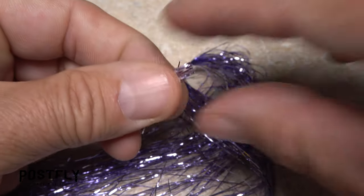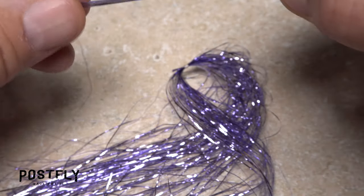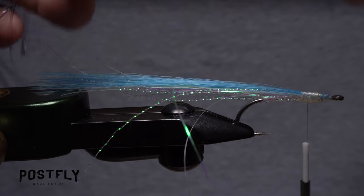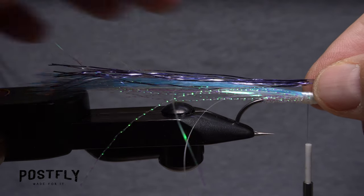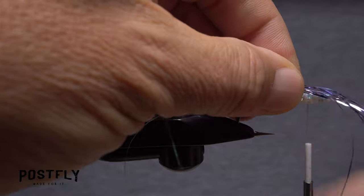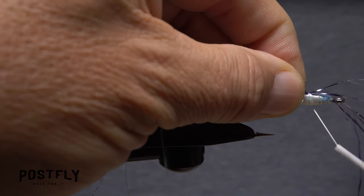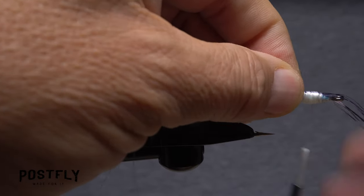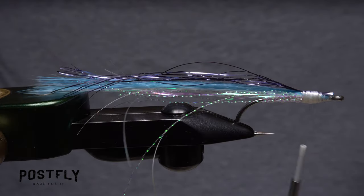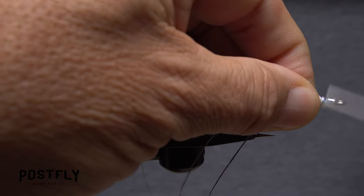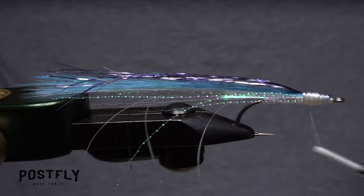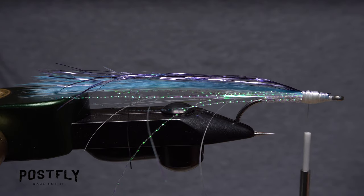Purple Flashaboo really takes the look of this fly to the next level. Snip eight to ten strands free from the hank and lay them over top of the blue faux bucktail so the tips extend all the way to the tips of the bucktail. Take wraps of tying thread to bind the purple flash to the top of the hook shank, then reach in with your tying scissors and snip it off even with the back edge of the hook eye. Take thread wraps to fill in any low spots between the back of the hook eye and the braid body of the fly.